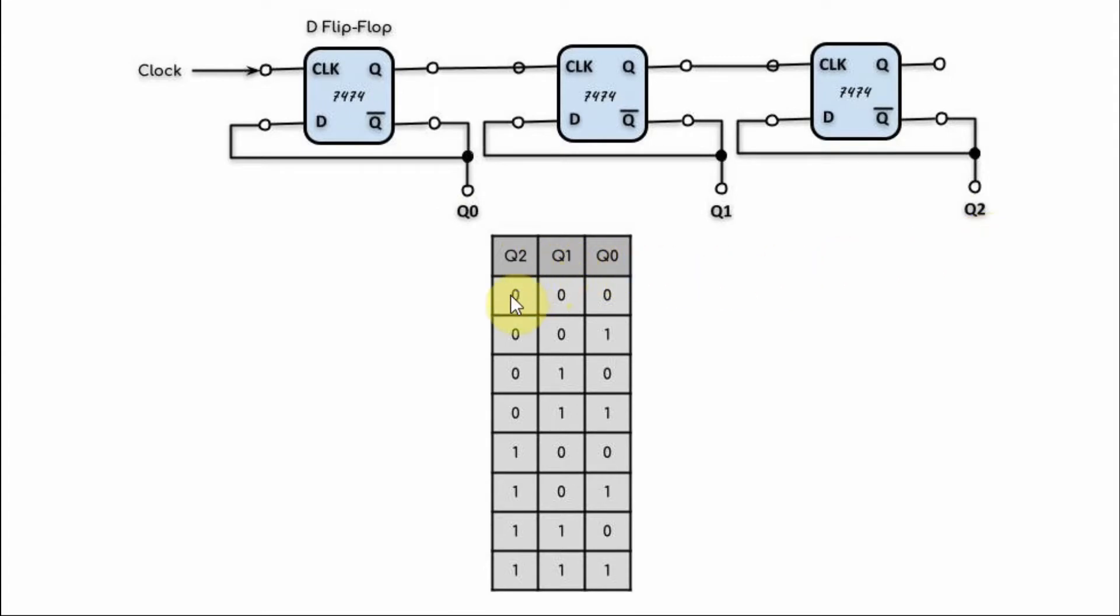The truth table of the output is shown here where we have a count value from 0, 0, 0 all the way to 1, 1, 1.